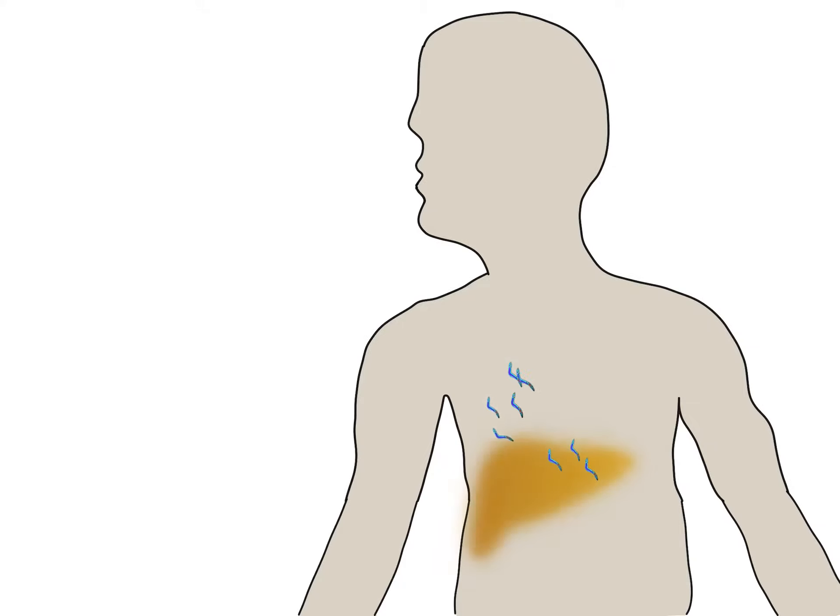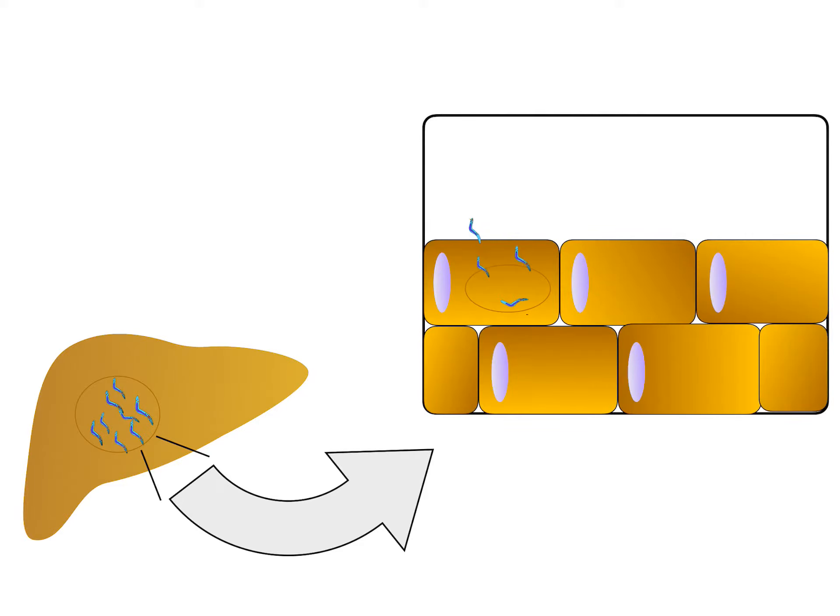The sporozoites in the bloodstream immediately enter hepatic cells of liver. The sporozoites undergo multiple asexual fission, a process called schizogony, and produce merozoites.